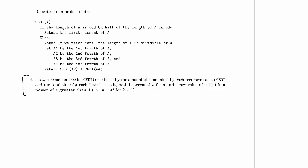We are now drawing a recursion tree for this algorithm, Keddy, labeled by the amount of time taken by each recursive call to Keddy and the total time for each level of calls, both in terms of n for an arbitrary value of n that is a power of 4 greater than 1. It just says greater than 1 because 4 to the 0, that's a power of 4, but it would fall into this base case anyway because that length is odd.